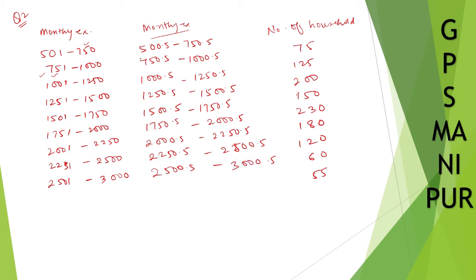Now if you can see here, 500.5, and the second one begins by 0.5. So this is continuous. We have made it into continuous. Now the question is asking us to draw a histogram and frequency polygon. Let us see the histogram first.